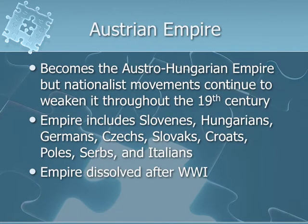The Austrian Empire had a long history. You might remember during the French Revolution, Marie Antoinette was an Austrian princess and her mother became Empress of Austria after a long drawn-out war over whether a woman could lead an empire. The Austrian Empire became the Austro-Hungarian Empire, but nationalist movements continued to weaken it throughout the 19th century. The empire included Slovenes, Hungarians, Germans, Czechs, Slovaks, Croats, Poles, Serbs, and Italians. The Austro-Hungarian Empire was dissolved after World War I.